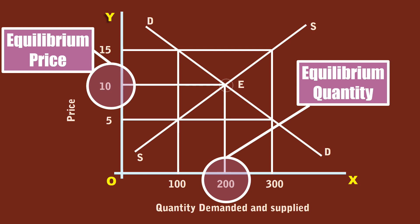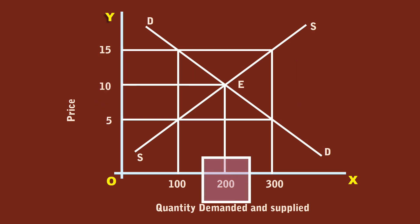At the equilibrium price, sellers sell what they desire, 200 units. Buyers get what they require, 200 units. At that price, market is cleared. Supply is exactly matched by the demand. Hence, the equilibrium price is also known as market clearing price.